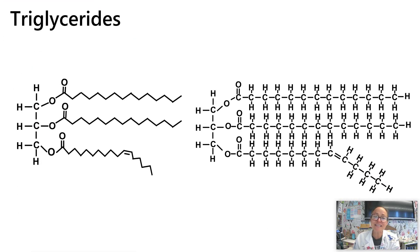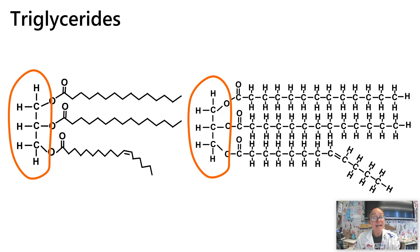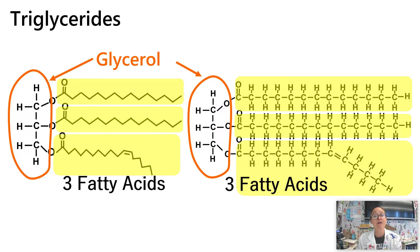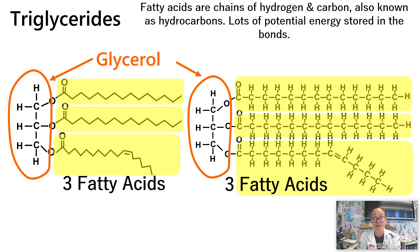Triglycerides are made of three elements: carbon, hydrogen, and oxygen. The component parts of a triglyceride include a glycerol, which has three carbons, some hydrogens, and some oxygens. Attached to that three-carbon glycerol molecule are what we call three fatty acids. The fatty acids are composed of hydrogens and carbons — they're called hydrocarbons or hydrocarbon chains. It's in the bonds between these carbons and hydrogens where that potential energy is stored.